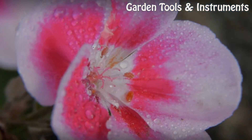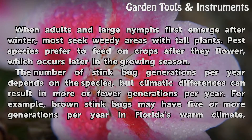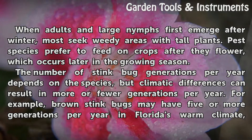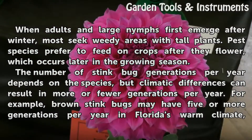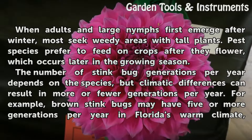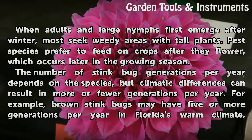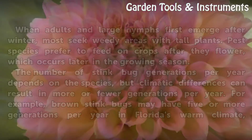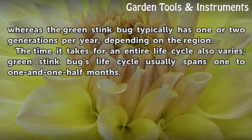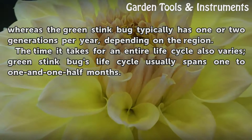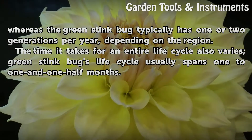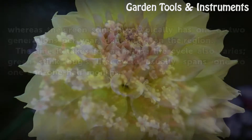Generations per Year. When adults and large nymphs first emerge after winter, most seek weedy areas with tall plants. Pest species prefer to feed on crops after they flower, which occurs later in the growing season. The number of stink bug generations per year depends on the species, but climatic differences can result in more or fewer generations per year. For example, brown stink bugs may have five or more generations per year in Florida's warm climate, whereas the green stink bug typically has one or two generations per year, depending on the region. The time it takes for an entire life cycle also varies; the green stink bug's life cycle usually spans one to one and a half months.